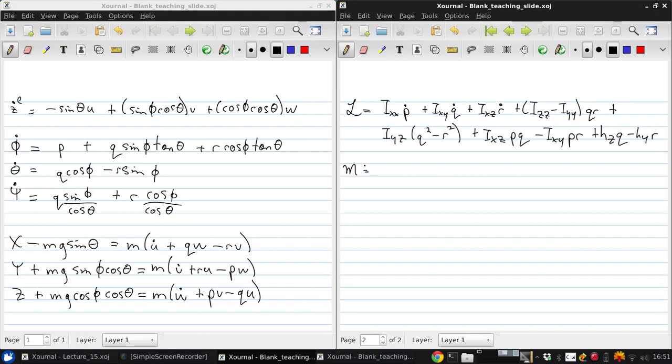The Y moment equation gives us M equals I_XY times P dot plus I_YY times Q dot plus I_YZ times R dot plus (I_XX minus I_ZZ) times RP plus I_XZ times (R squared minus P squared) plus I_YZ times PR minus I_XY times QR.